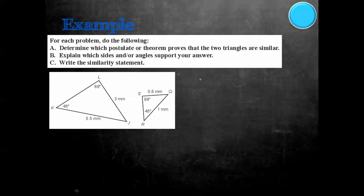On this one, determine which postulate or theorem proves the two triangles are similar, explain which sides or angles support your answer, and write the similarity statement. Looking at the figure, we're given two sides and two angles. To use side-angle-side, we would need an angle right here between those sides, which isn't given. However, we can see angles of 89 and 46 matching 89 and 46, so we can use the angle-angle similarity postulate.